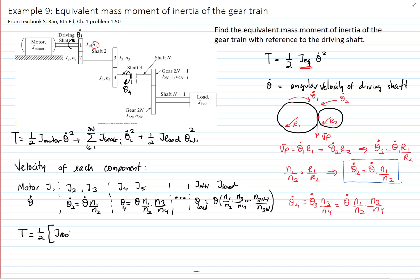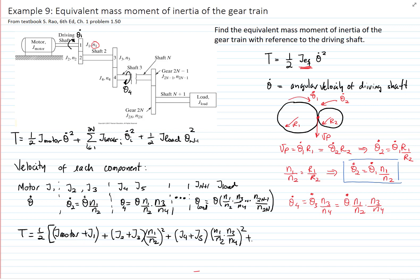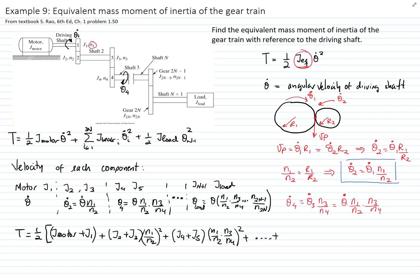So if we substitute all these values into our kinetic energy expression, we have the motor term unchanged, and then we expand the inertia for each of the shafts. Gear 1 has the same velocity as the motor, so we put it in the same parenthesis. Then j2 and j3 share the same velocity, and gear 4 and 5 share a velocity related to the motor by the tooth ratio. We continue this for every single gear, writing all the tooth ratios squared, until the final gear 2n and the load which share the same velocity.